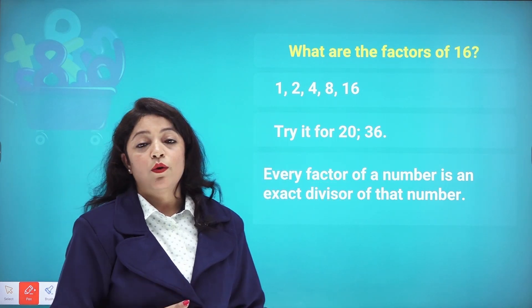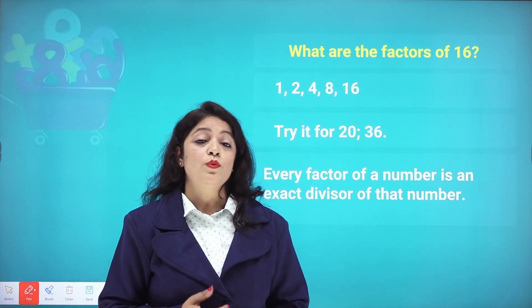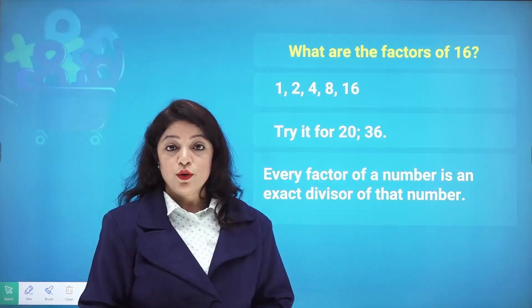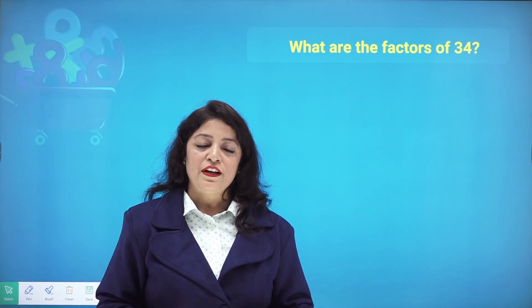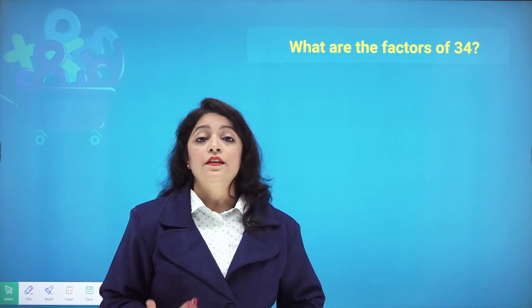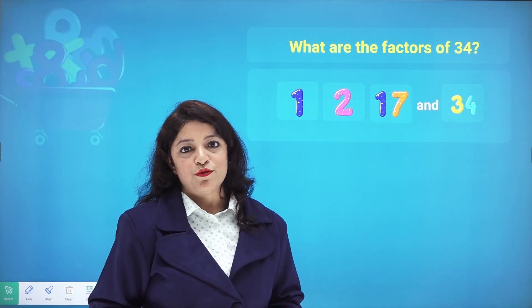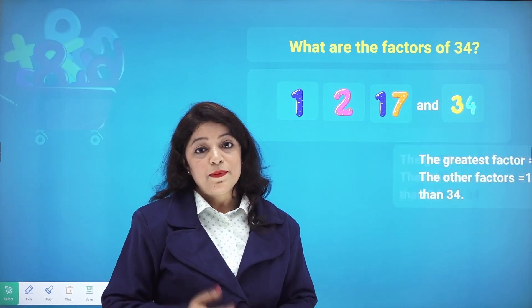Let's take more examples. What are the factors of 34? First, 1 is a factor of every number, and 34 is a factor of itself. Since 34 is an even number, 2 is also a factor, and 2 times 17 gives 34, so 17 is also a factor. Therefore 1, 2, 17, and 34 are all the factors of 34.